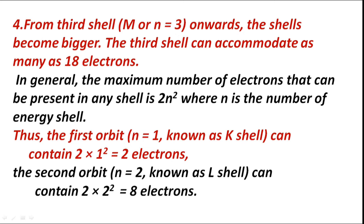Thus, the first orbit n = 1, known as K shell, can contain 2 × 1² = 2 electrons. The second orbit n = 2, known as L shell, can contain 2 × 2² = 8 electrons.